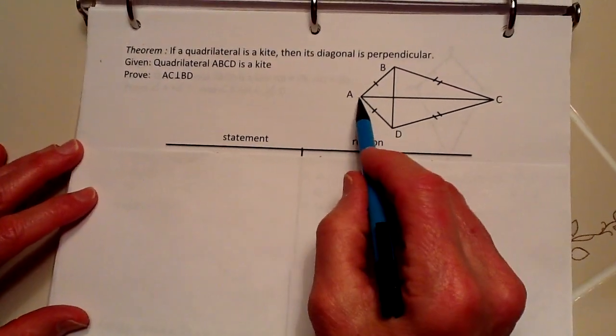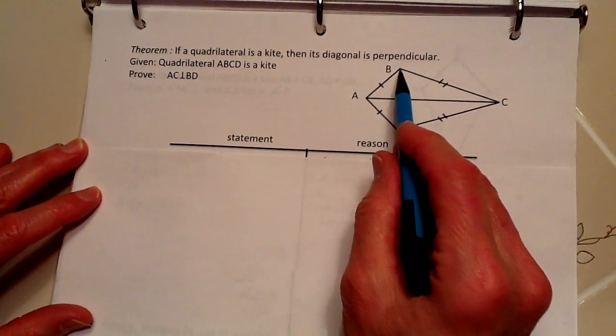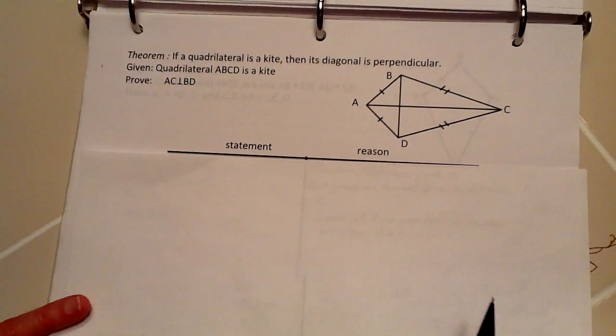And what we're going to prove is that this line AC, which is a diagonal, and BD, which is a diagonal, are perpendicular to each other.